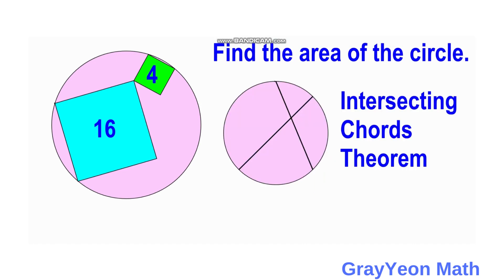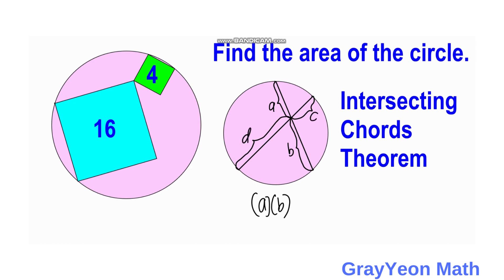We will be solving this problem using the intersecting chords theorem. The intersecting chords theorem states that if you have chords inside a circle that intersect, then the product of one chord's segments is equal to the product of the other chord's segments. So if the segments are A and B, and the other chord's segments are C and D, then A times B is equal to C times D.